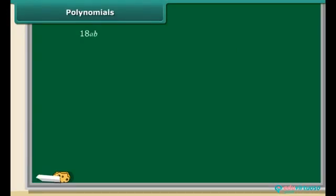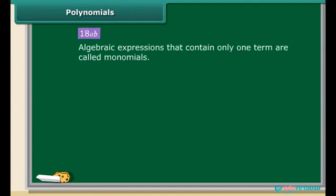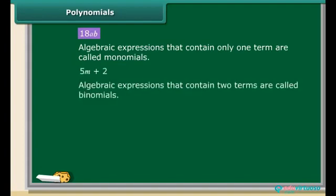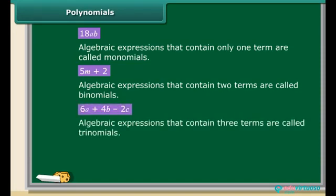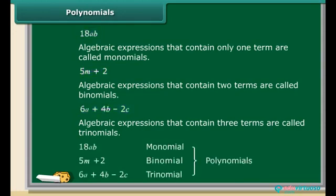An algebraic expression with only one term is called a monomial. An expression like 5m + 2, which has two terms, is called a binomial. The expression 6a + 4b − 2c has three terms, so it is called a trinomial. Remember, all algebraic expressions that have one or more than one term are called polynomials.